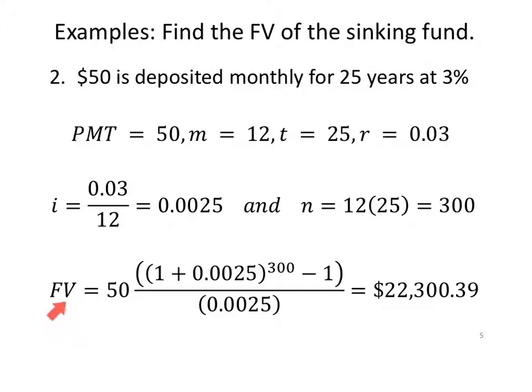Substituting everything we know in our formula, FV equals 50 times parentheses, 1 plus our i value, to the power of 300, come out of your exponent, subtract 1, close off the parenthesis for the numerator, divide by the i value. And you'll end up with $22,300 that you've saved up over the course of 25 years. $50 a month, not bad.